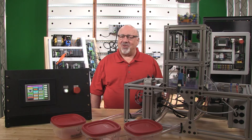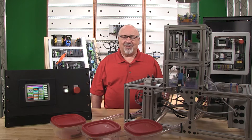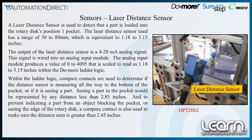A laser distance sensor is used to determine that a part has been loaded into the first position of the rotary disk. The laser distance sensor has been set up to show a sensing range of 1.18 to 3.15 inches. The output of the laser distance sensor is wired into a 4 to 20 milliamp analog input module. A value of 0 to 4,095 is produced in the DoMore PLC and is scaled to read 1.18 to 3.15 inches. Compare contacts used in the ladder logic determine if the distance reading indicates a part is loaded or if the pocket is empty.